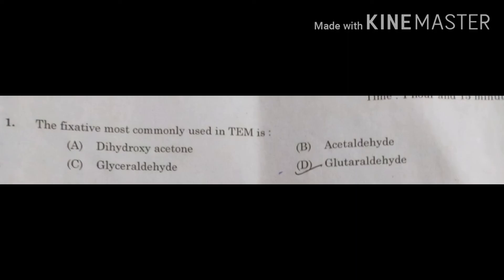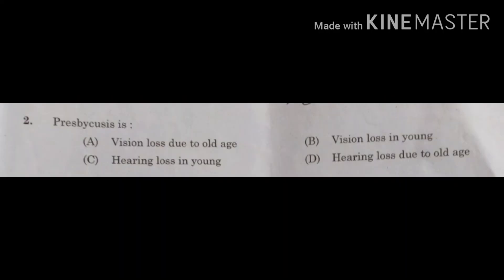Looking at the options, there are three aldehydes mentioned: acetaldehyde, glyceraldehyde, and glutaraldehyde. The most appropriate answer is glutaraldehyde. Glutaraldehyde acts as a fixative by reacting with the amino groups of basic amino acids such as arginine and lysine, producing cross-linked proteins. This cross-linkage maintains proper fixation. So the correct option is D — glutaraldehyde.